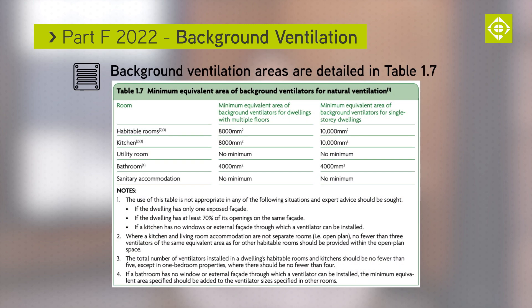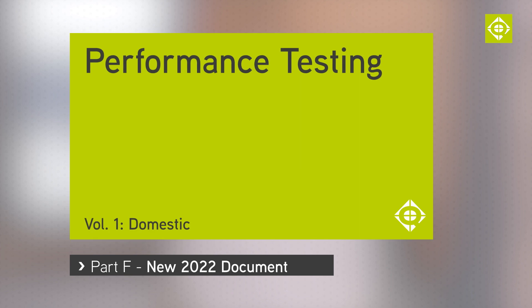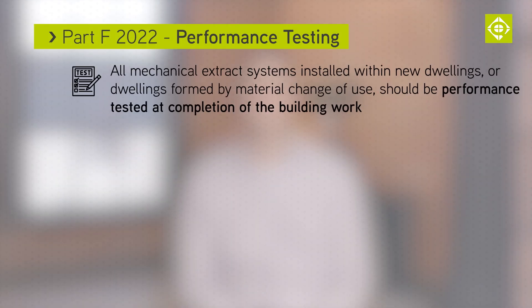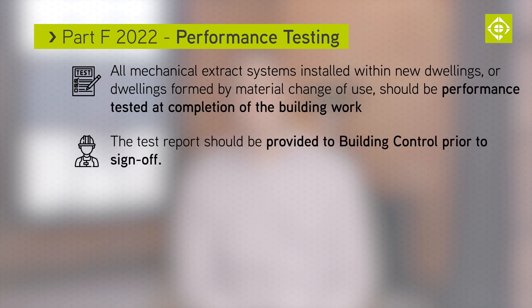Background ventilation should be provided following the guidance in Table 1.7. Figures are provided for minimum equivalent areas of background ventilation for single storey dwellings and dwellings with multiple floors. All mechanical extract systems installed within new dwellings or dwellings formed by a material change of use should be performance tested at completion of the building work. The test report should be provided to building control prior to sign off.